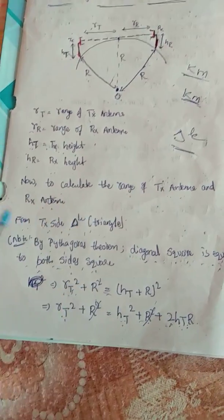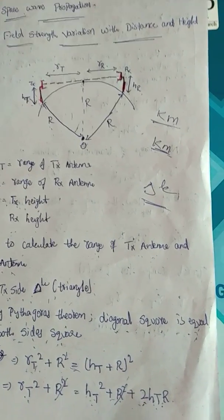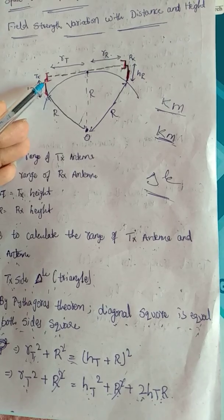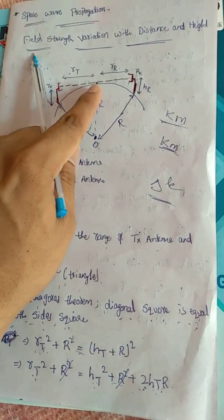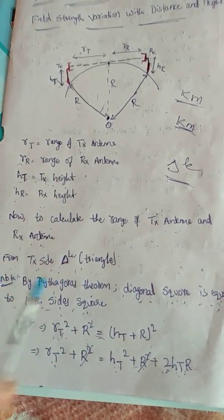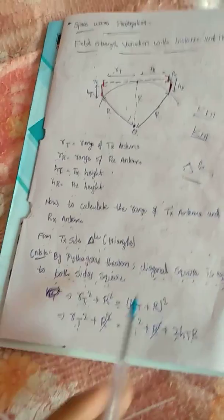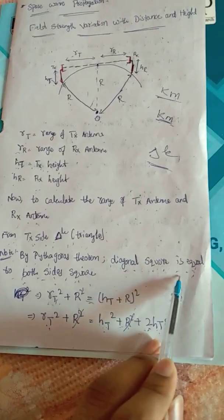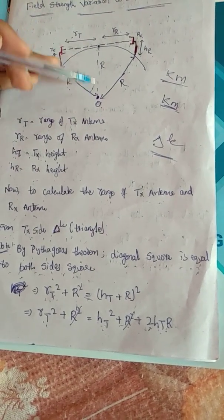Now we are going to calculate the range of the transmitter and receiver antennas. From the transmitter side triangle, we apply the Pythagorean theorem, which states that the diagonal squared is equal to the sum of both side squares. In the transmitter side triangle, one side is RT, another side is R, and the diagonal is the hypotenuse.